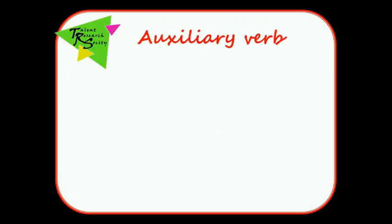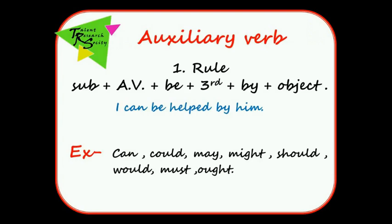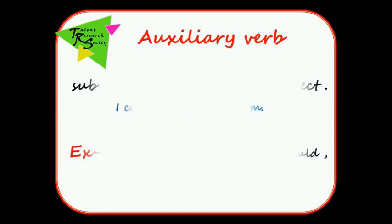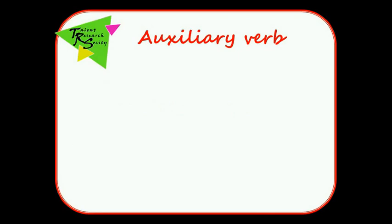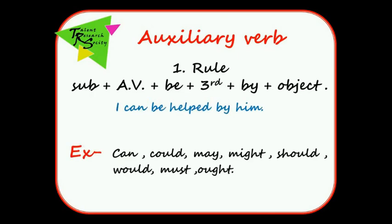Auxiliary verb Rule number one: Subject plus auxiliary verb plus BE plus third form plus BY plus object.